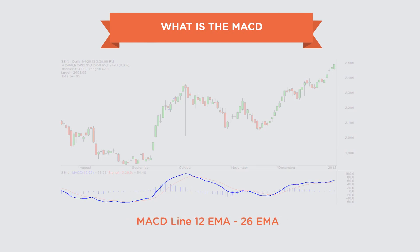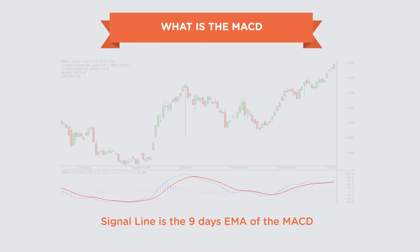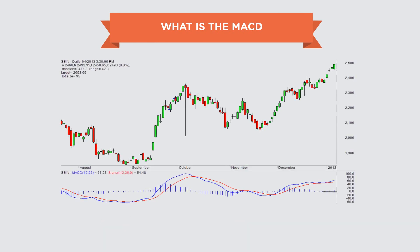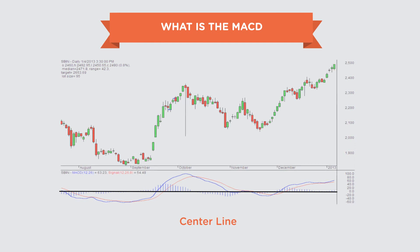The MACD line is derived by subtracting the 12-day EMA from the 26-day exponential moving average. The signal line, which is the red line, is the 9-day EMA of the MACD and can be seen in the top right corner of the MACD panel. Then we have the center line — the center line is the zero line, and it's quite important as you will soon find out. The MACD is a trend-following indicator and the only really important line here is the zero line or the center line. It's where the MACD value becomes zero and moves the demand and supply area.